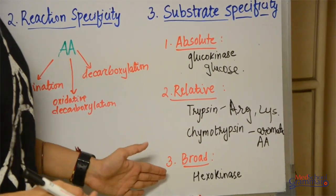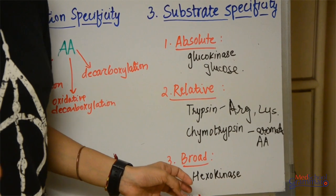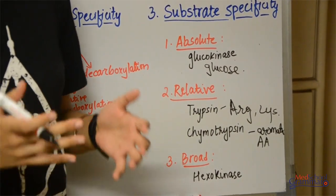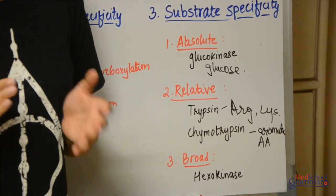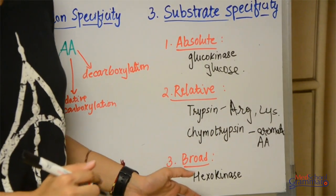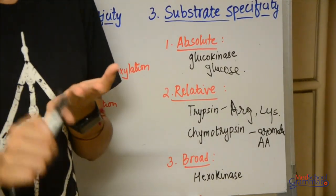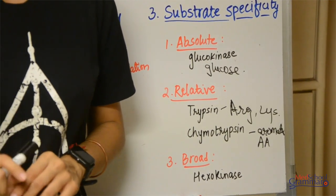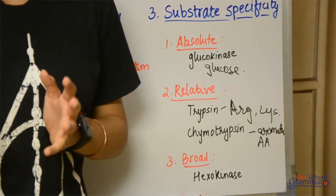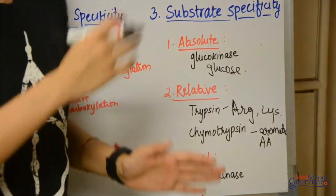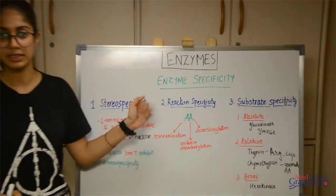We then have broad specificity — broad substrate specificity — which is another group specificity where the substrates are closely structurally related. For example, hexokinase acts on glucose, fructose, mannose, and glucosamine, but it does not act on galactose. There is a structural resemblance between the four that it acts on, because of which hexokinase can act on all four of them. So those are the enzyme specificities.